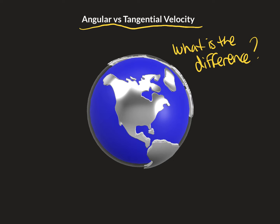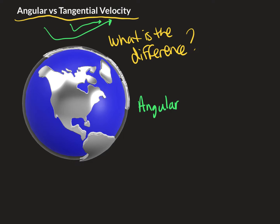Angular and tangential are both dealing with velocity, and they're kind of a fancy way to describe different types of motion. When we see angular, this is where we're talking about objects going in a circle. And when you see tangential, this comes from the word tangent, which means linear.